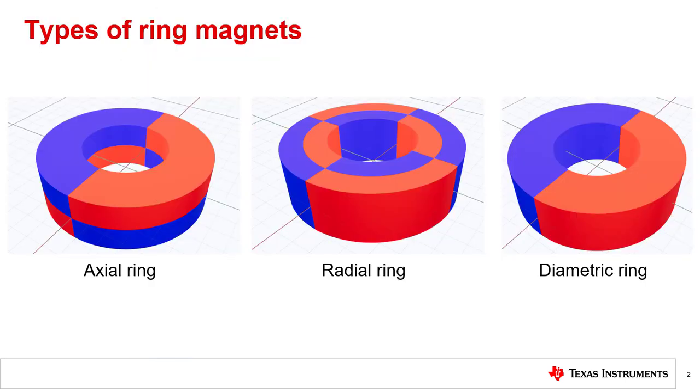The TIMS simulation environment is capable of simulating three types of ring magnets: axial ring magnets, radial ring magnets, and diametric ring magnets.